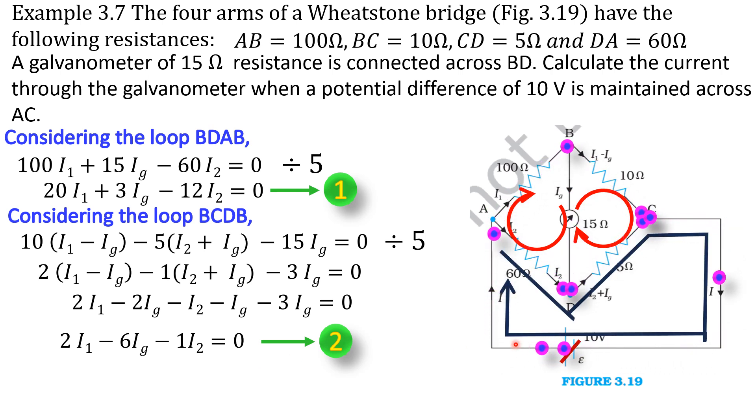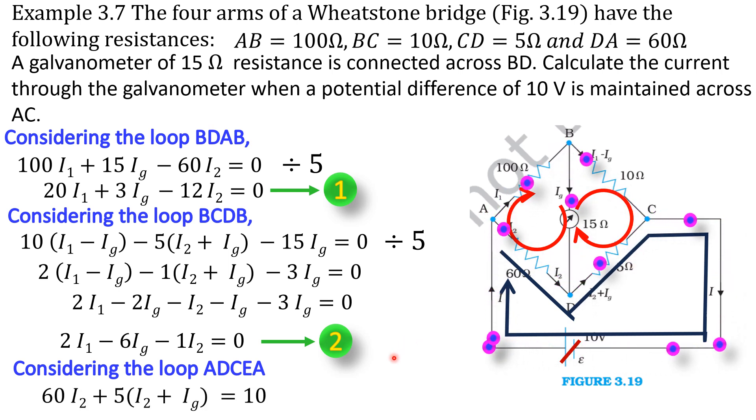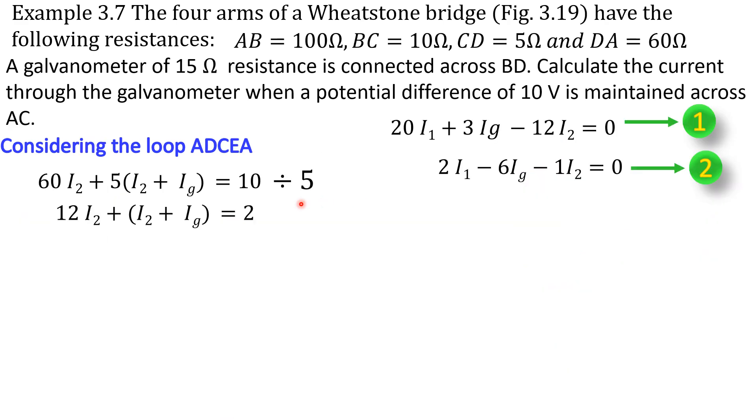Next, we consider this ADCEA loop. Here, both the loop direction and the current directions are same. So the equation becomes 60I2 plus 5 into I2 plus IG is equal to 10. Here, 10 volt is given. So that is equal to 10. Dividing this equation by 5, we get 13I2 plus IG is equal to 2. Let us consider this is equation 3.